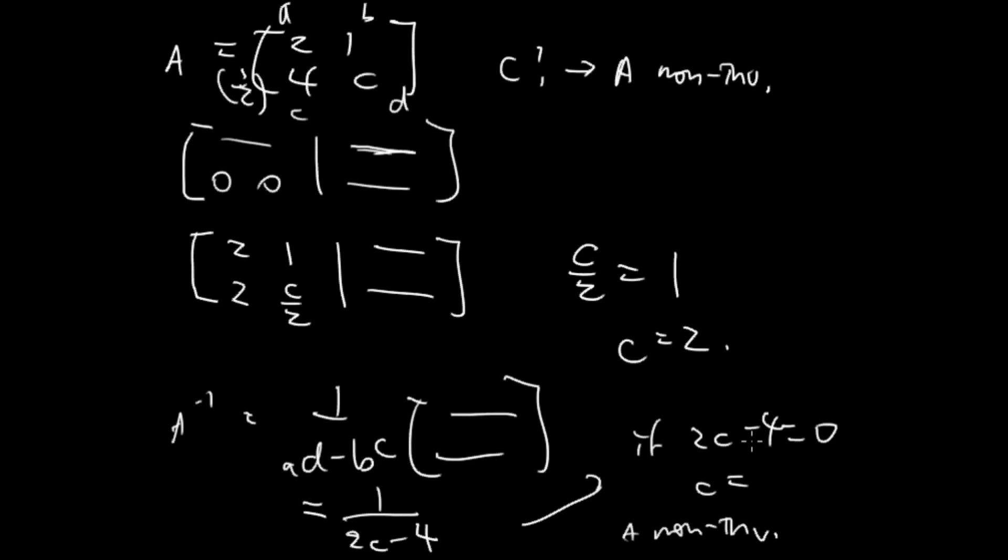And we now solve for C. We add 4 to the other side and divide by 2. So C equals 2. You get the same result. And this is the answer to the problem.